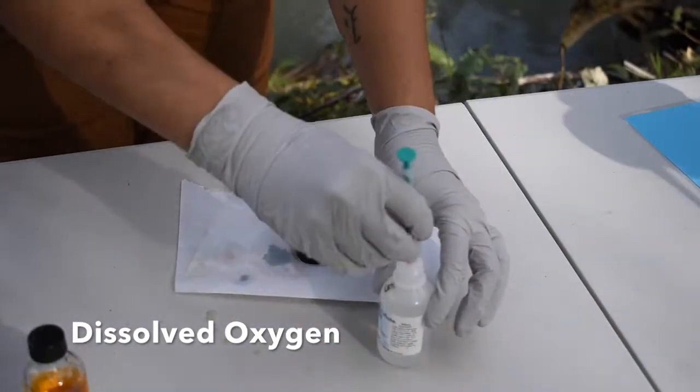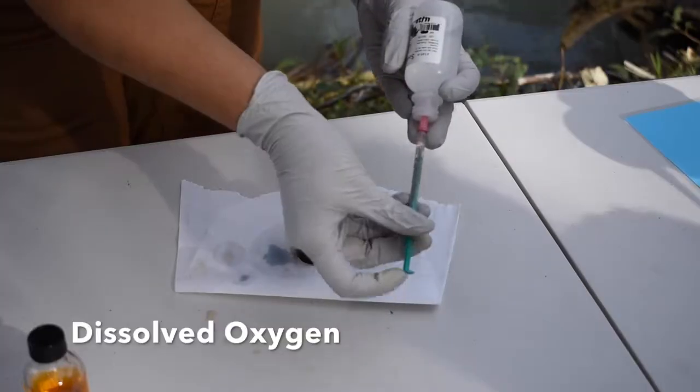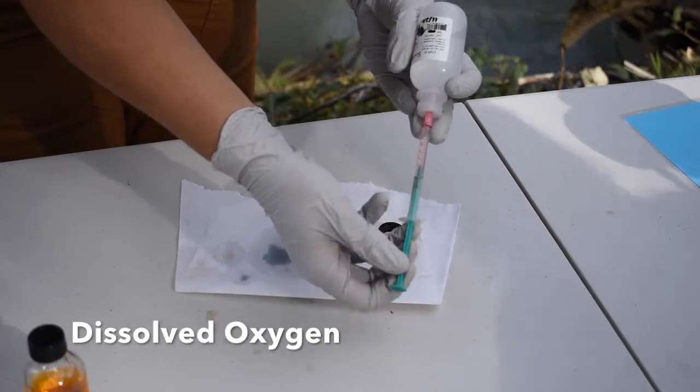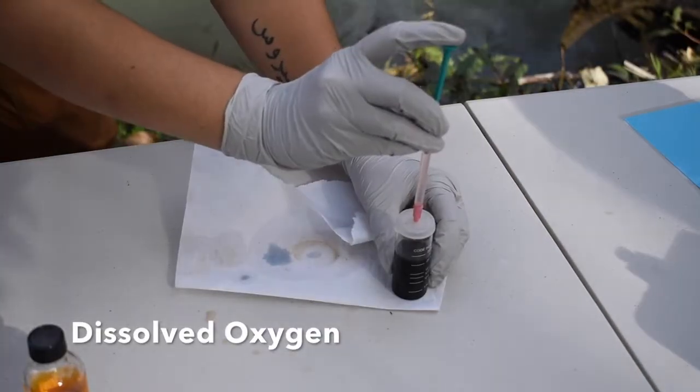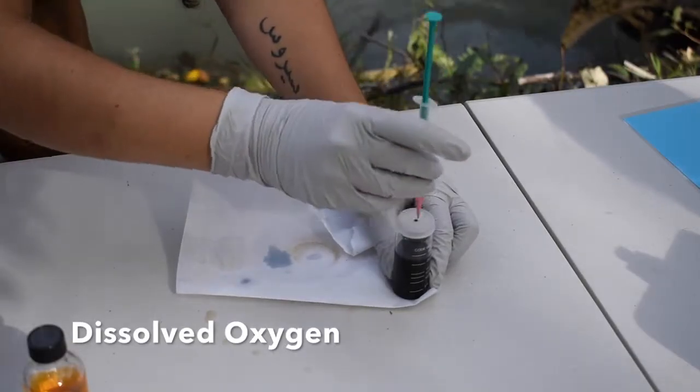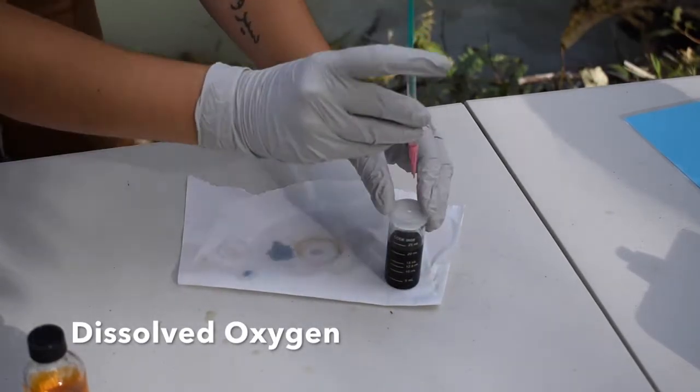Then we will fill our titrator all the way up with chemical number 5, sodium thiosulfate. Then, starting 3 drops at a time, we will add the sodium thiosulfate to our B bottle.